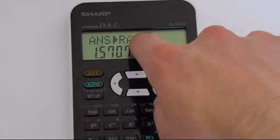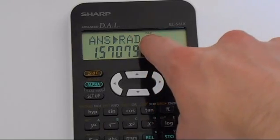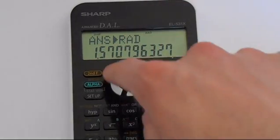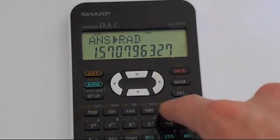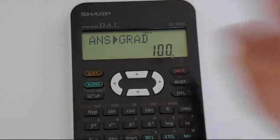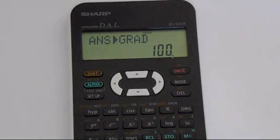And you'll notice that this has changed from degrees to radians on the top. If you press shift, or rather second function, and then press the pi button again, we get gradians. And 90 degrees is 100 gradians.